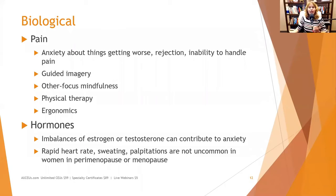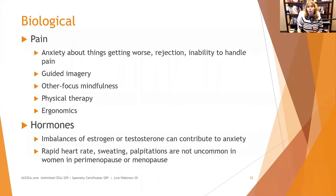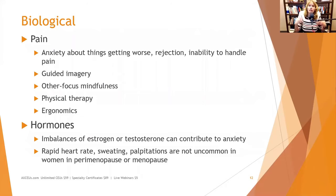Hormones are another factor — imbalances of estrogen and testosterone can contribute to anxiety symptoms, heart palpitations, fatigue, and irritability. We can't address that as clinicians, but doctors can. Rapid heart rate, sweating, and palpitations are not uncommon in women in perimenopause or menopause. Many women start feeling like they're developing generalized anxiety as they reach their mid-40s to mid-50s. We're not going to diagnose it, but we want them to recognize it may not be catastrophic — it's something many women experience.